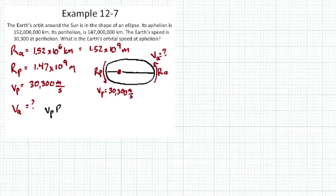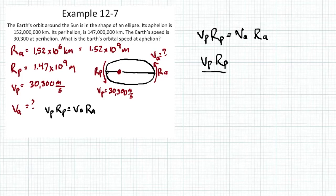Velocity at perihelion times radius of perihelion equals velocity at aphelion times radius at aphelion. If we're solving for velocity at aphelion all the way out here, then we simply have to divide by radius at aphelion. V_P R_P equals V_A R_A. Let's just divide by R_A. Velocity at perihelion times radius at perihelion divided by radius at aphelion equals velocity at aphelion.